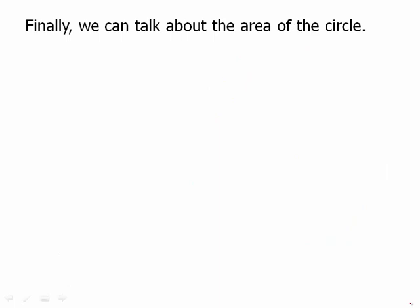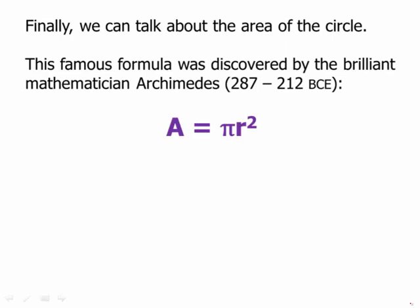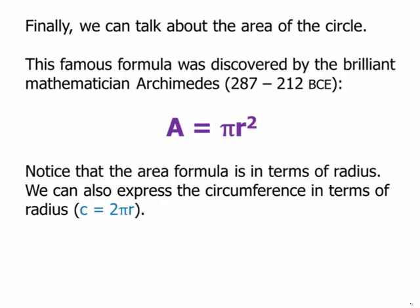Finally, we can talk about the area of the circle. This famous formula was discovered by the brilliant mathematician Archimedes. Archimedes was really one of the greatest mathematicians of all time. His formula is area equals pi r squared. Notice that the area formula is in terms of the radius. We can also express the circumference in terms of the radius.